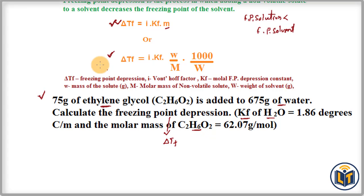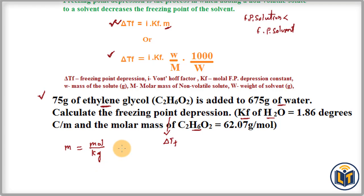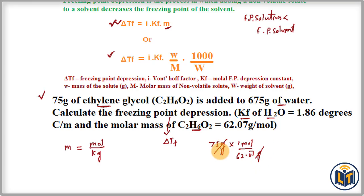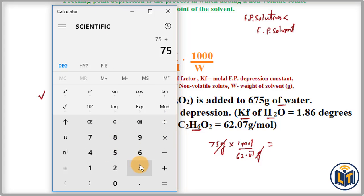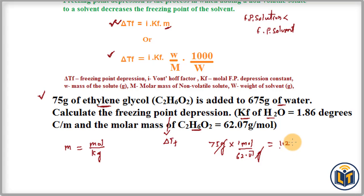Before applying the formula, we need to calculate the molality of the solution. Molality equals moles of solute divided by kilograms of solvent. To convert mass of solute to moles: 75 grams divided by 62.07 grams per mole gives us 1.208 moles of solute.